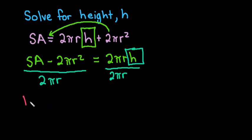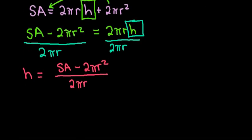So we could say that the height is equal to the surface area minus 2 pi r squared divided by 2 pi r. The other option that we could have done is instead of dividing the whole thing, I could have divided individually by the 2 pi r, so I could simplify this if I wanted to.